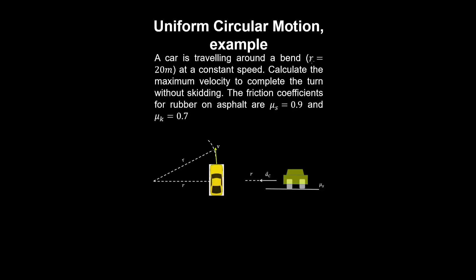A car is traveling around a bend with a radius of 20m at a constant speed. Calculate the maximum velocity to complete the turn without skidding.